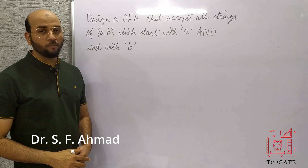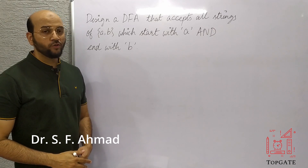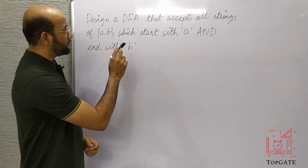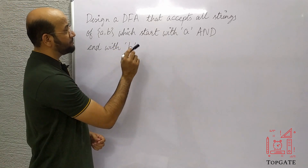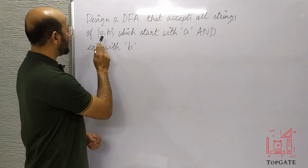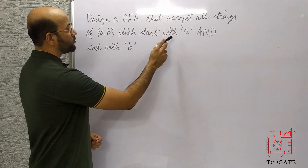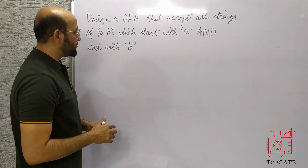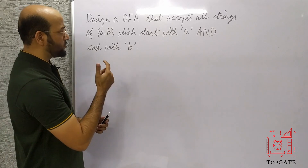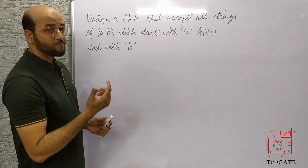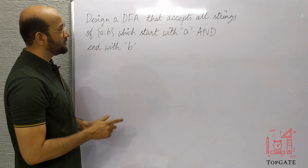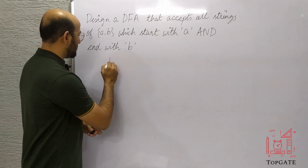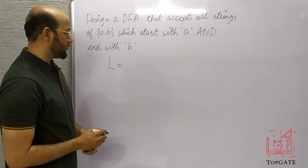Hello students, welcome to the channel Topgate. In this video I will discuss one more problem of DFA, that is to design a DFA that accepts all strings of A, B which start with A and end with B. Let's first understand what kind of language we have, what is the shortest possible string that we can accept, and then we'll design a DFA for this.